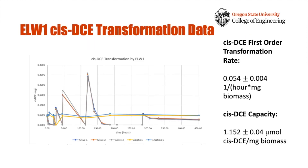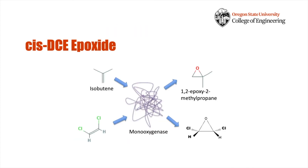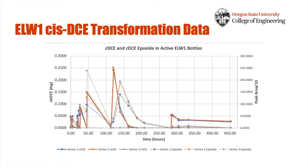Here you are seeing the disappearance of CIS-DCE in milligrams over time. The spikes you see are the subsequent additions of CIS-DCE to the bottles. The first-order rate is representative of the transformation rate for the first CIS-DCE spike in the three active bottles. What's different with this experiment compared to the previous work is that, thanks to the sensitivity of the ECD detector, we can also track the formation and disappearance of the CIS-DCE epoxide formed by the monooxygenase. It looks pretty similar to the epoxide we saw before with isobutene. This is the same graph, but now the CIS-DCE epoxide is also shown by the dotted lines for each active bottle.